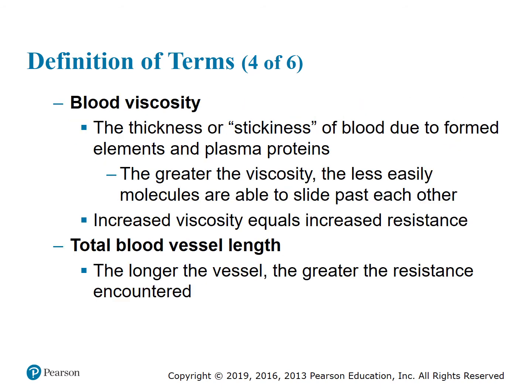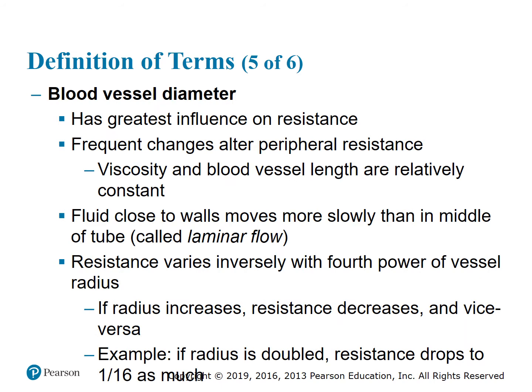Blood viscosity is the thickness or stickiness of blood due to formed elements and plasma proteins; greater viscosity means less ease for molecules to slide past each other, and increased viscosity equals increased resistance. The longer the vessel, the greater the resistance encountered. Blood vessel diameter has the greatest influence on resistance. Fluid close to the walls moves more slowly than in the middle of the tube — called laminar flow. Resistance varies inversely with the fourth power of vessel radius; for example, if the radius is doubled, resistance drops to 1/16th as much.